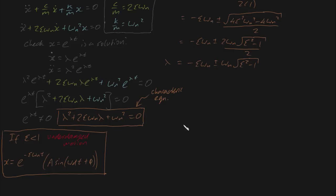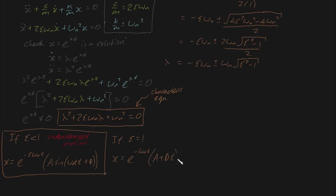Now let's consider the case where ζ is exactly equal to 1. If ζ = 1, the square root equals zero, so the roots are the same. It follows that x equals e^(−ωₙt) times (a + bt), where both a and b are constants. This is what we call critically damped motion.